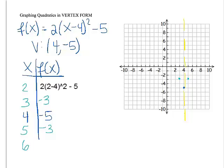If I plug in 2, or substitute in 2, I get 2 minus 4 is negative 2, squared is 4, times 2 is 8, minus 5 is positive 3. So my next point is 2, 3, and 6, 3.